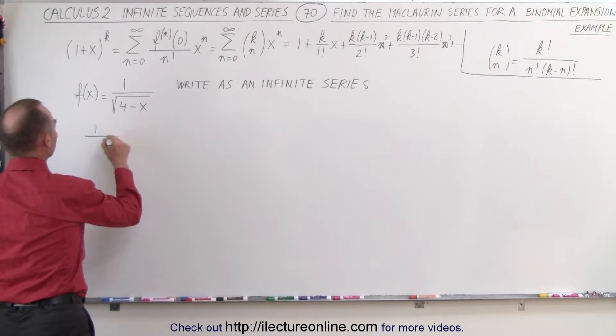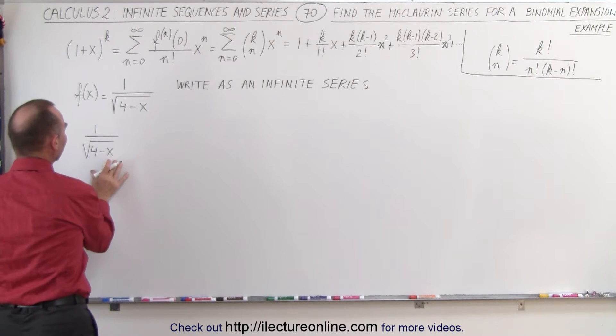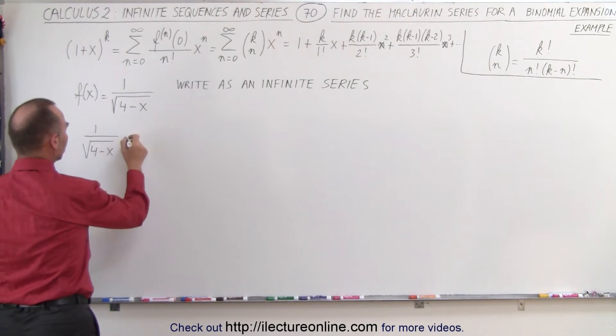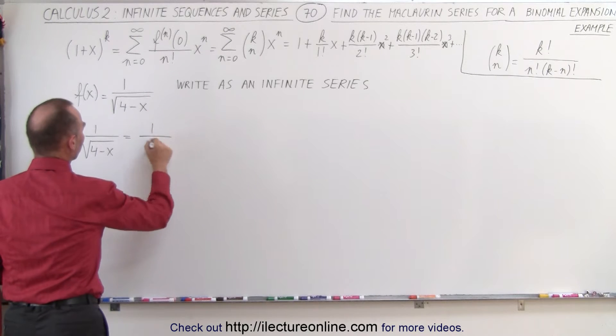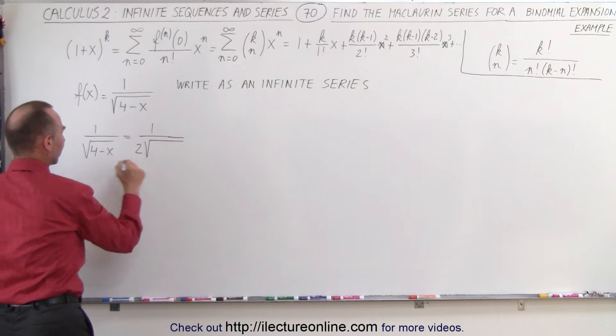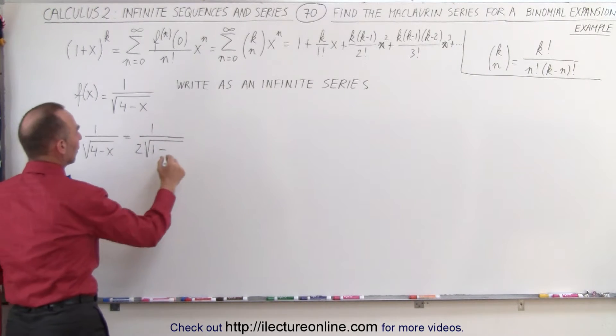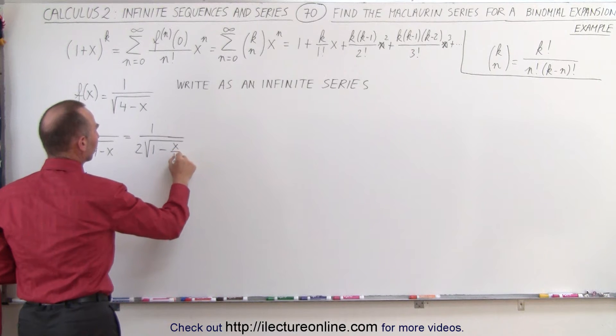We can take 1 over the square root of 4 minus x and we can factor out a 4. When we do that, the square root of 4 is 2, so this can be written as 1 over 2 times the square root of 1 minus x over 4.